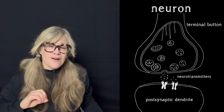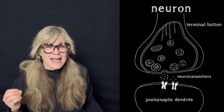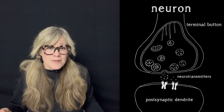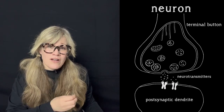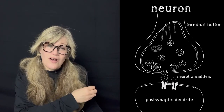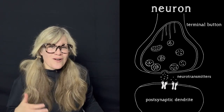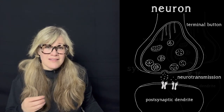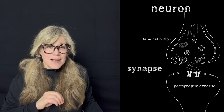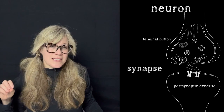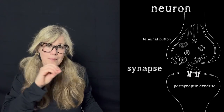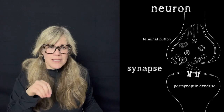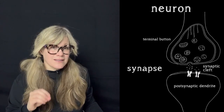Neurotransmitters are also called chemical messengers because they are chemical molecules. This chemical transmission is how the signal is passed on to the next neuron. This process is called neurotransmission, and this whole space is called the synapse. The synapse includes the presynaptic terminal button, the postsynaptic dendrite, and the space in between them, which is called the synaptic cleft.